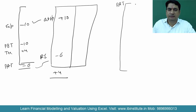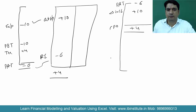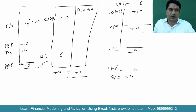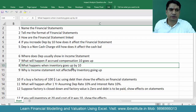Now what will happen to the cash flow statement? Profit after tax is minus 6, but the change in current liability is plus 10, so cash flow from operations is plus 4. There is no effect on CFI and no effect on CFF. Surplus and deficit is plus 4, so closing cash is plus 4. Cash is going up because you are able to save on taxes — when you charge an expense, you save on taxes.